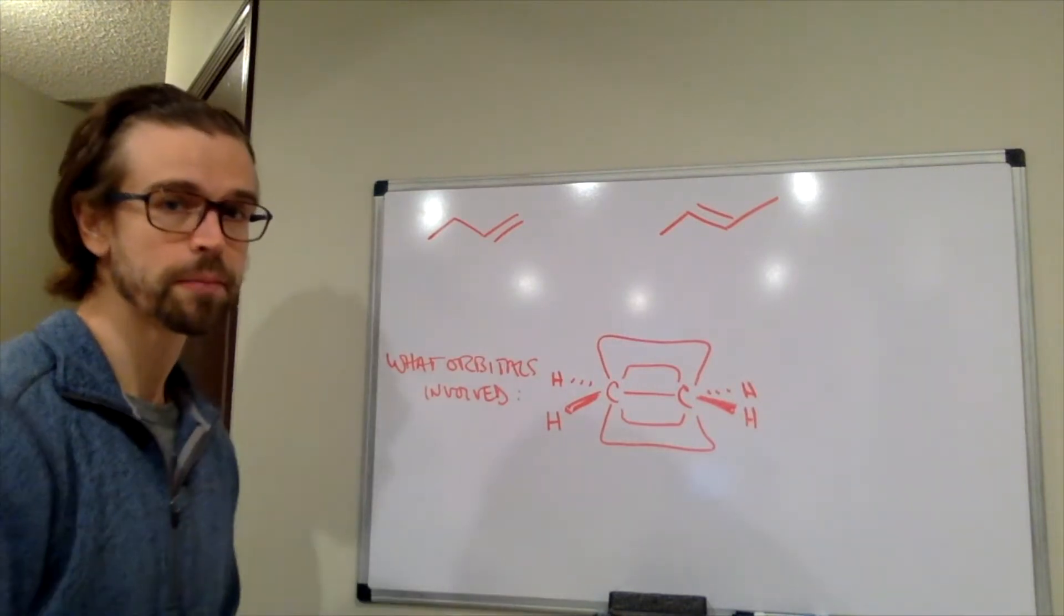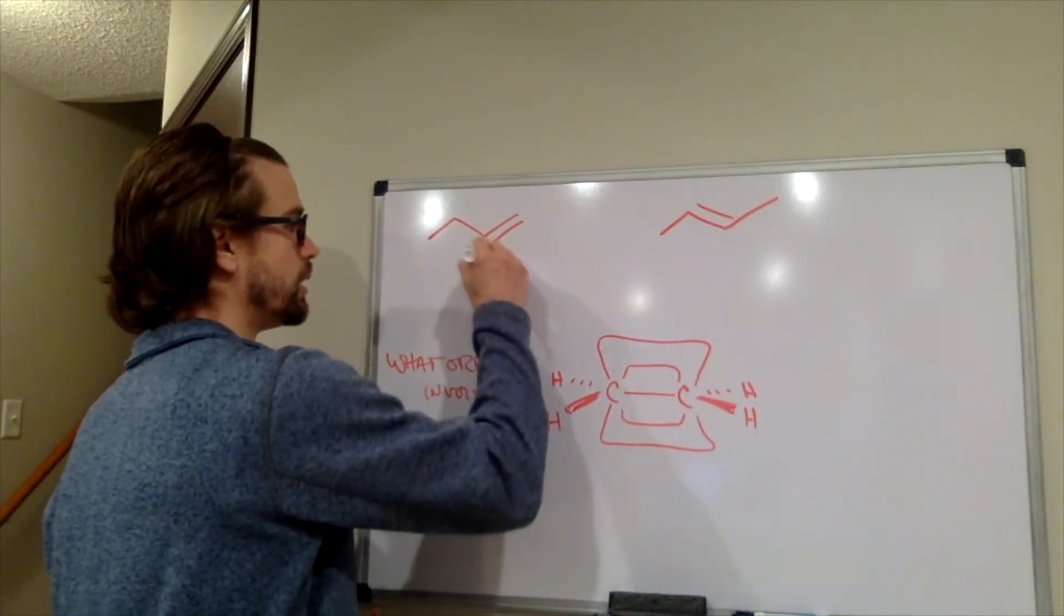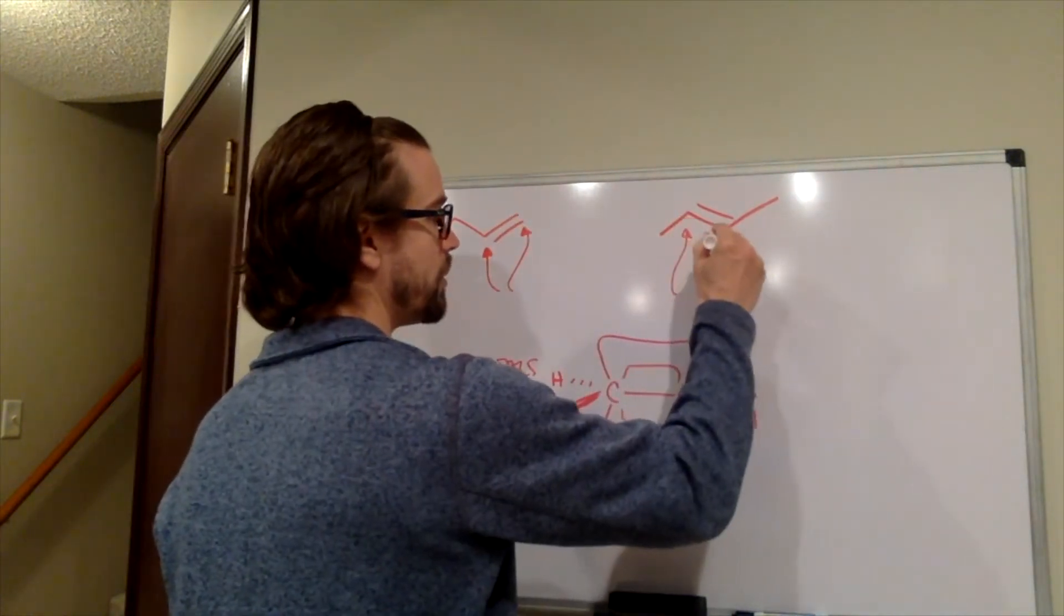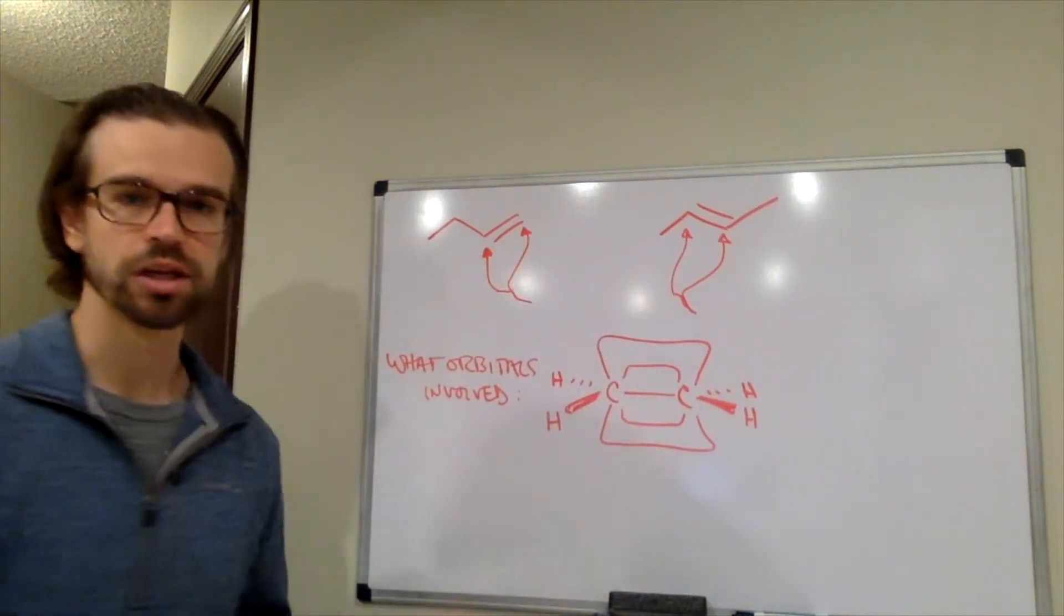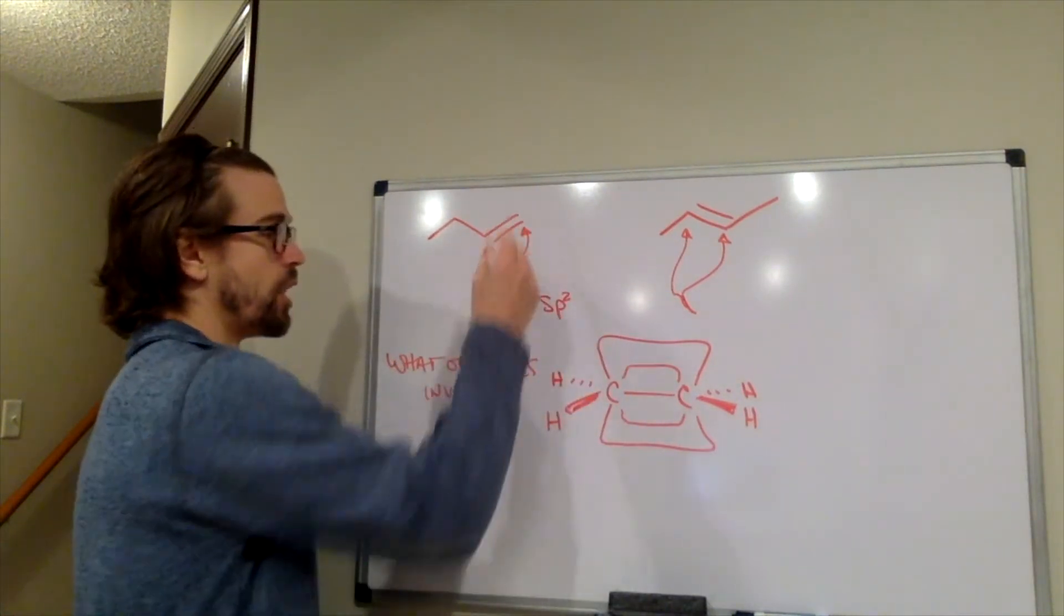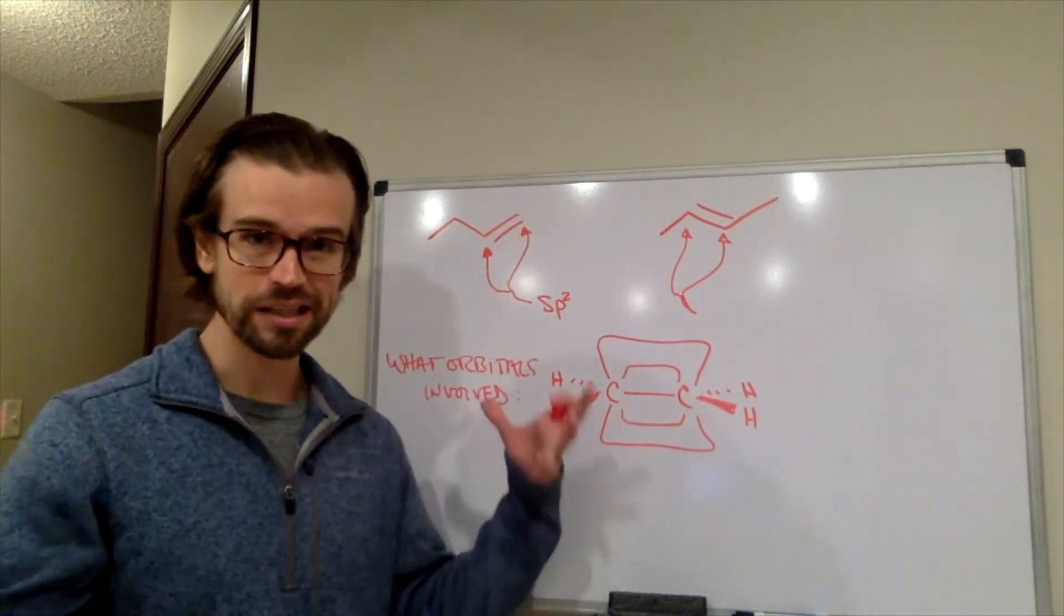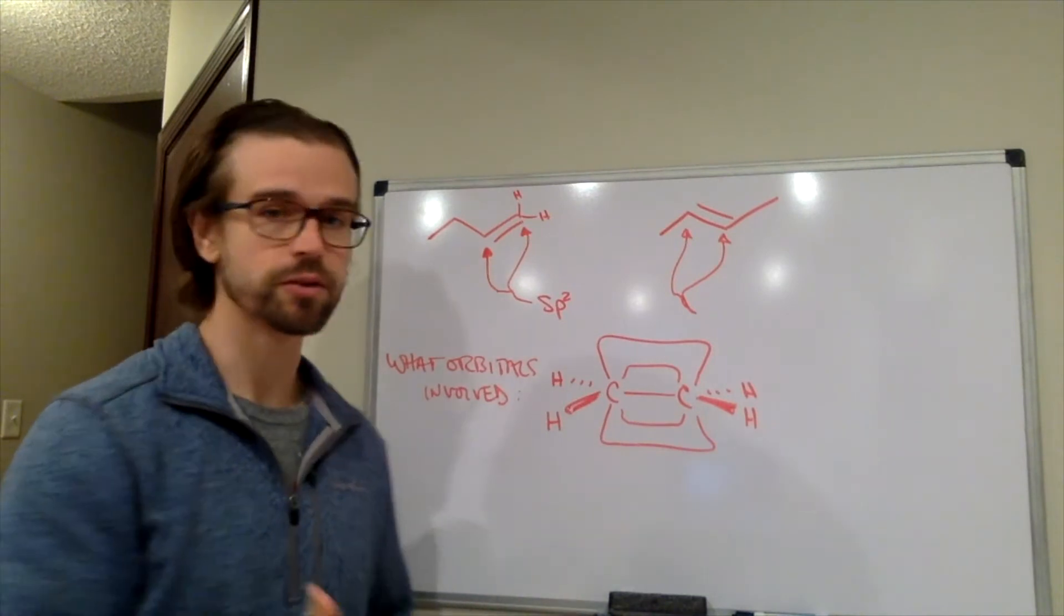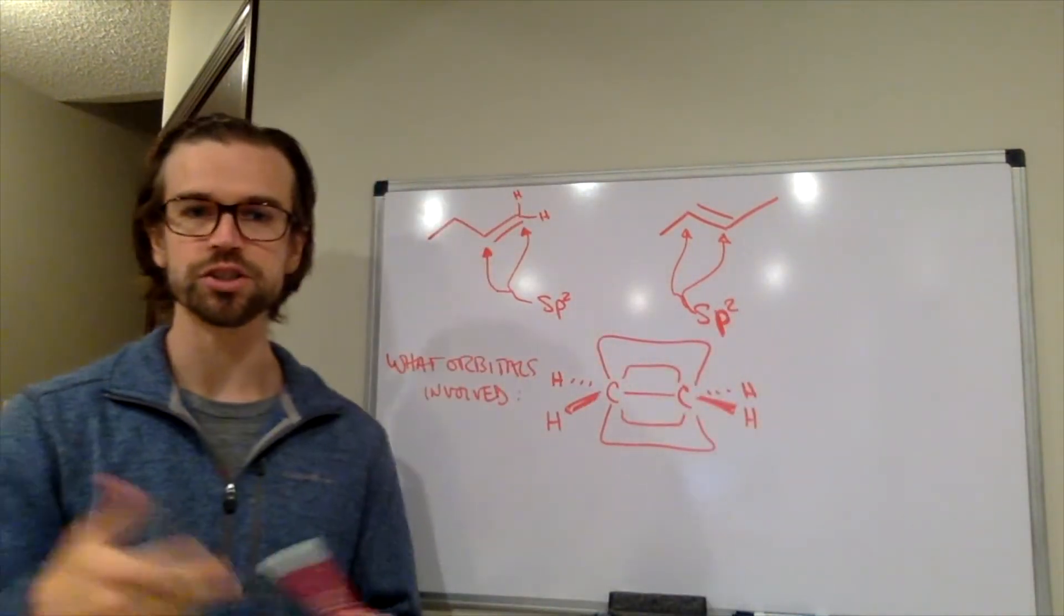Thinking back to when we started learning about structure in general, what's our hybridization of our alkenes? We're talking about the carbons of the alkene. What are they hybridized? Go ahead and pause the video and decide. Great, you did that. These carbons have three groups around them. The double bond is technically in one area, so that's one group, and then the two hydrogens are the other two groups. So we need three hybrid orbitals, so they're sp2 hybridized.